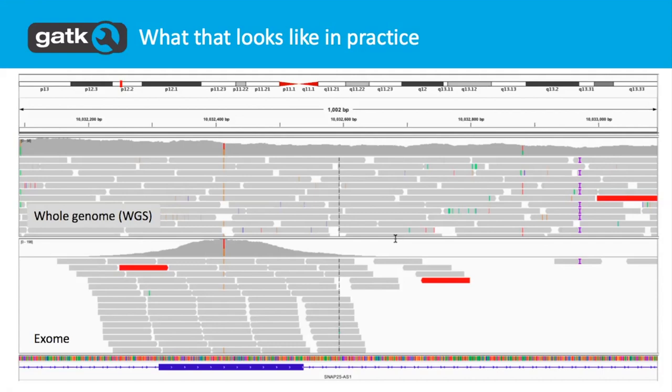For the area that whole exome sequencing was designed for — an actual exonic area as shown in the gene track — you can see that both data types are perfectly good for calling a SNP, which you can see by the little orange dots.